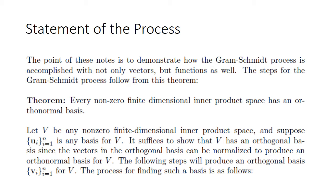The steps for the Gram-Schmidt process follow from this theorem: every non-zero finite dimensional inner product space has an orthonormal basis. We'll let capital V be any non-zero finite dimensional inner product space, and suppose that small u is a sequence of vectors that form a basis in V. It suffices to show that V has an orthogonal basis, since those vectors can be normalized to produce an orthonormal basis. The following steps will produce an orthogonal basis labeled with small v.